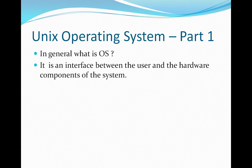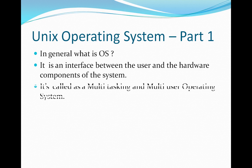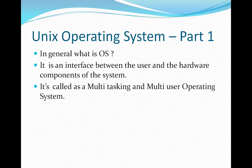UNIX is also an interface between the user and the hardware components of the system. It is called a multitasking and multi-user operating system, meaning you can perform multiple tasks at a time. Whereas in Windows on a personal PC a single user can access the system, in UNIX multiple users can access the system at a time.